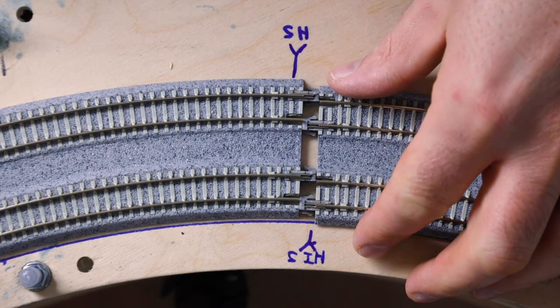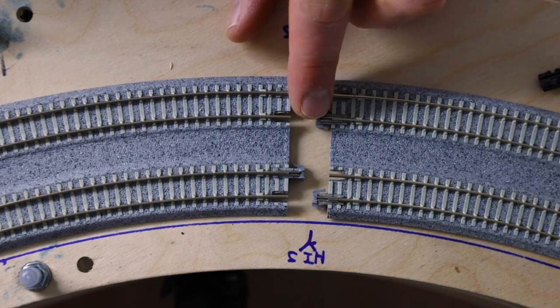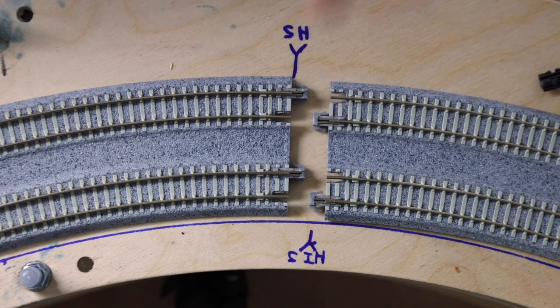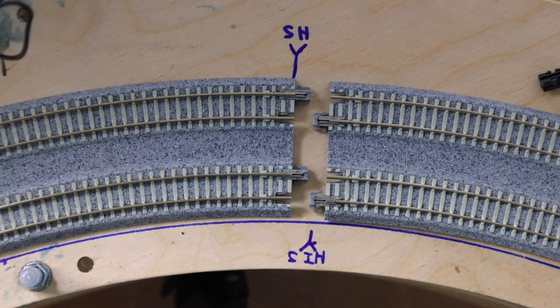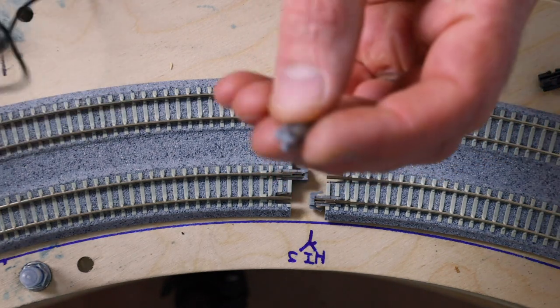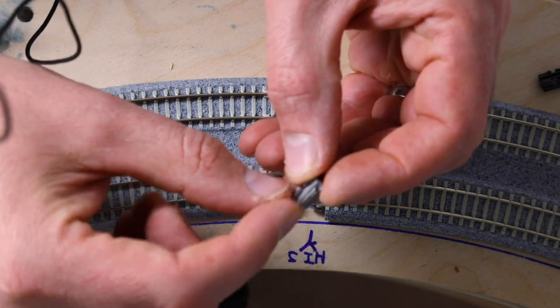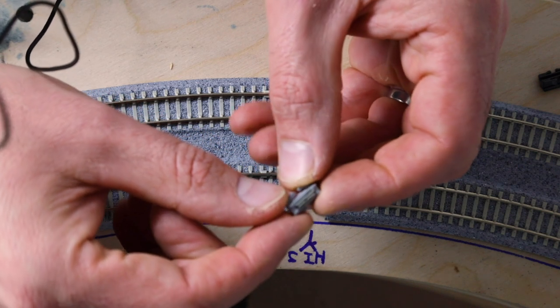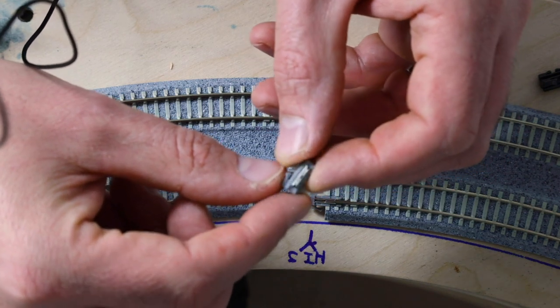With Kato Uni tracks, they use these uni joiners to connect the tracks. They are a plastic connector with a metal rail joiner embedded in it. It transfers the power and it's also a physical connection between the tracks.